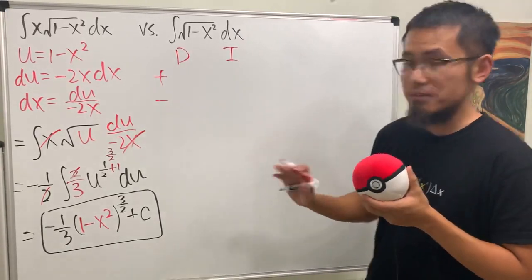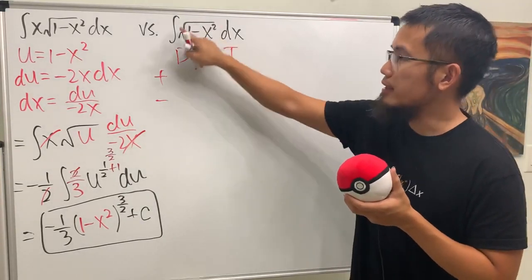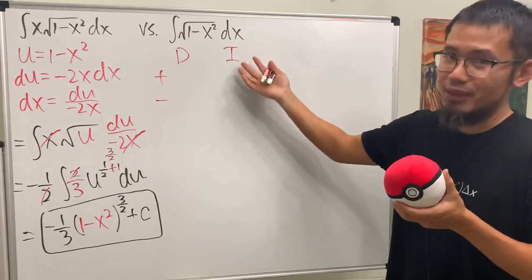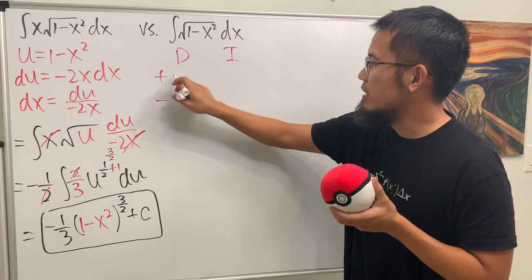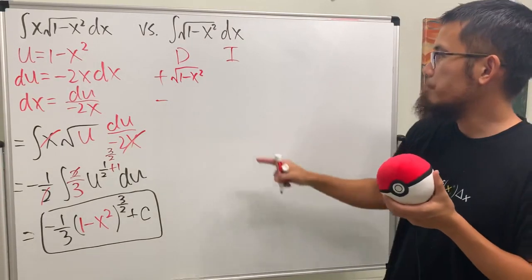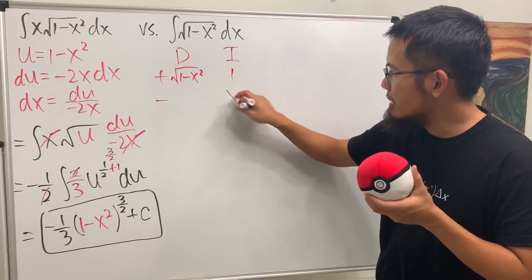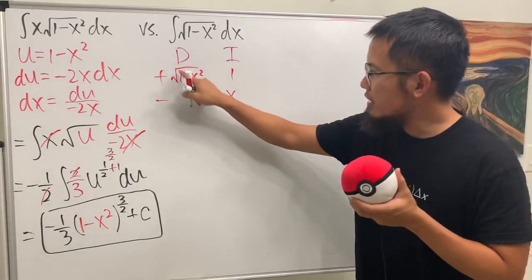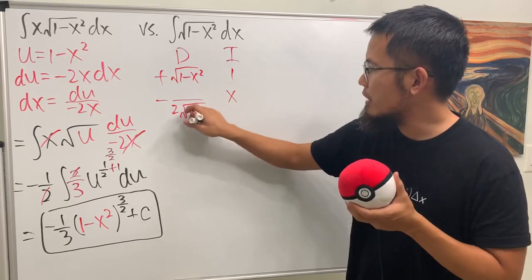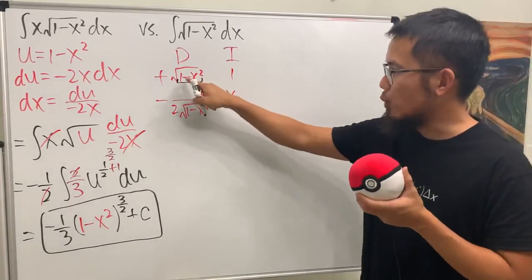Two rows is enough. I'm trying to integrate this, and I don't want to put the square root of 1 minus x squared in the I column — I cannot integrate that easily. So let me differentiate it instead. Let's put the square root of 1 minus x squared in the D column, and for I, I will integrate 1, which gives x. Differentiating the square root, we get 1 over 2 times the square root of the inside — don't forget the chain rule — multiplied by the derivative of the inside, which is negative 2x.